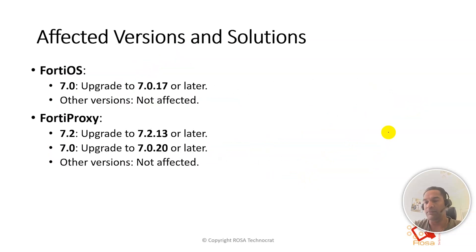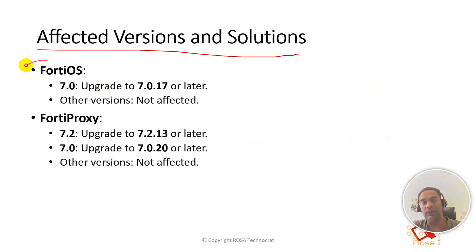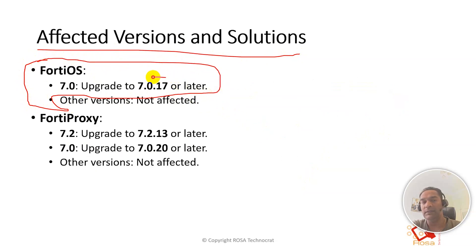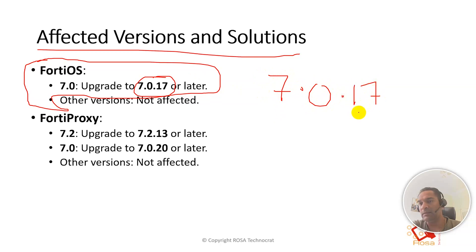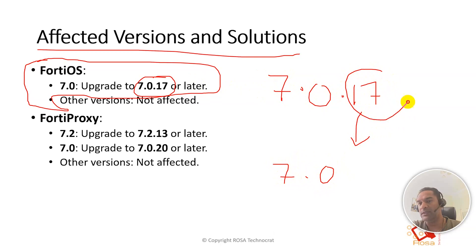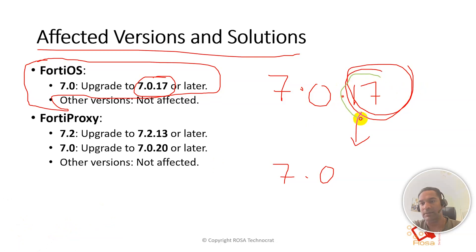Let's check who is affected. The affected version is FortiOS 7.0. If you are running FortiOS 7.0, you are affected. The entire 7.0 branch is affected, and the fix has been released in version 7.0.17. So anything below 7.0.17 is affected — upgrade to 7.0.17 to remediate this vulnerability.